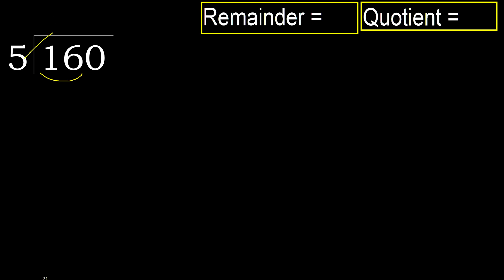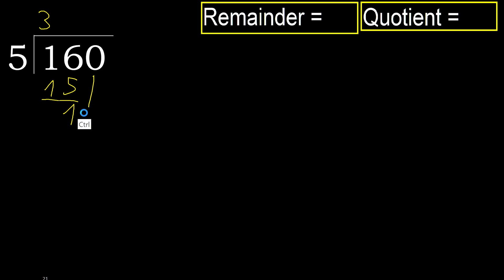5 multiplied by which number is nearest to 16 but not greater? 5 multiplied by 4 is 20 — 20 is greater. Multiply by 3: 15. 15 is not greater, ok. Subtract. Next.